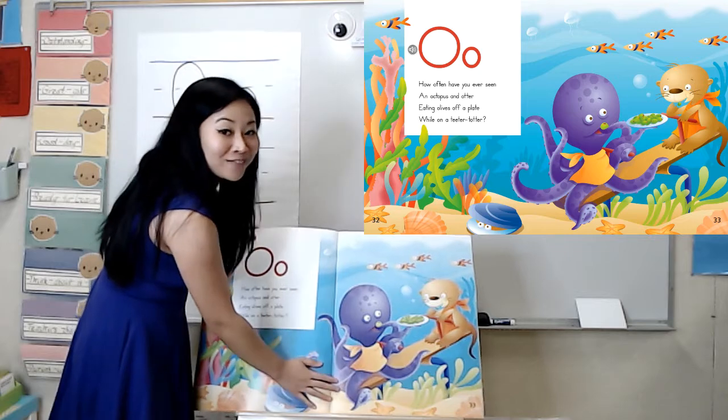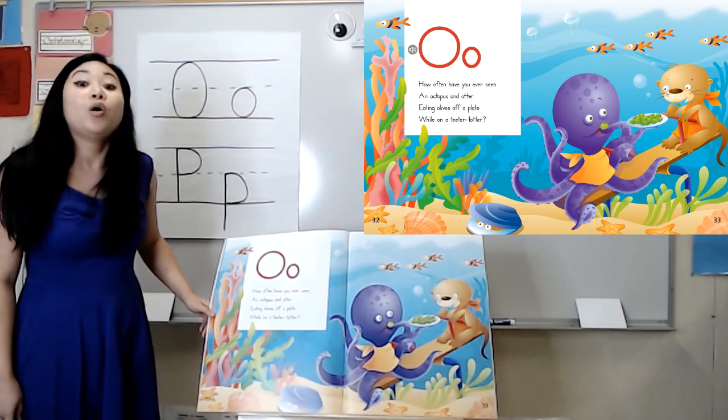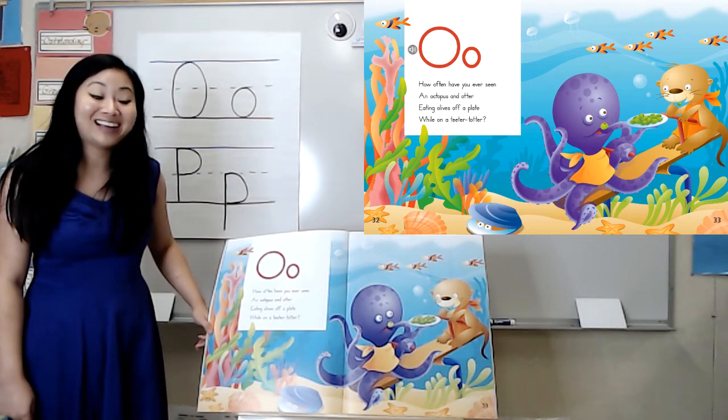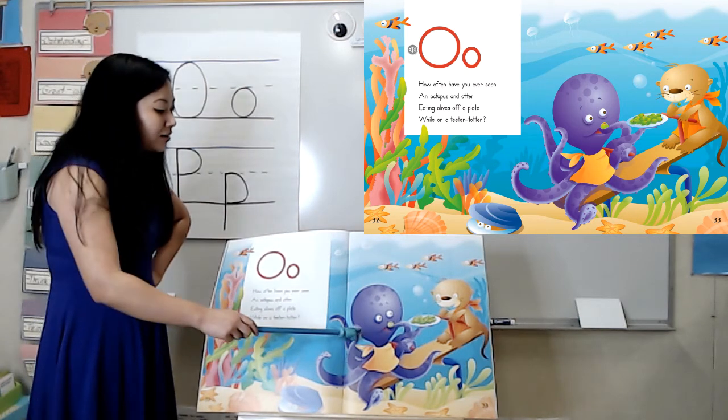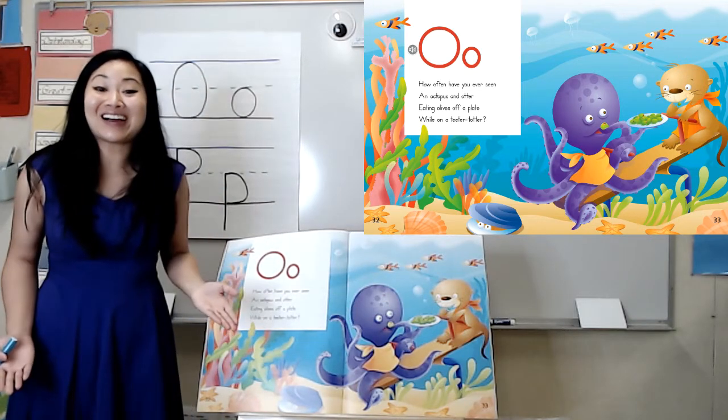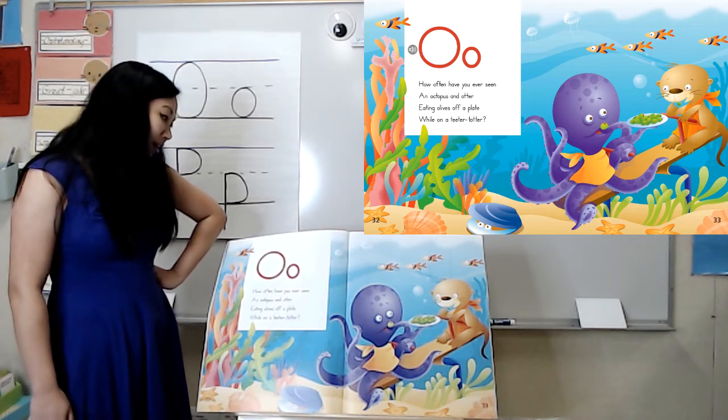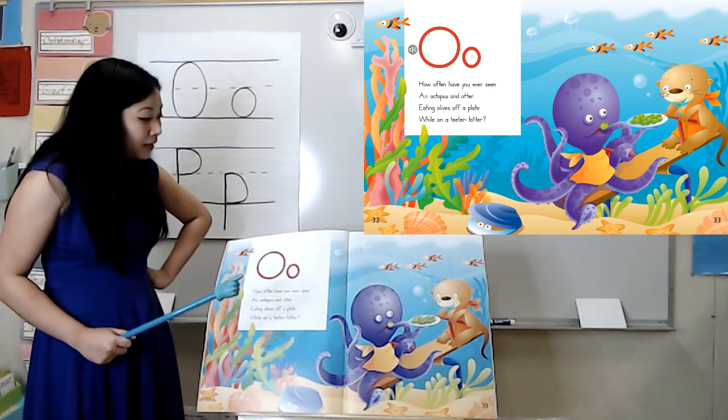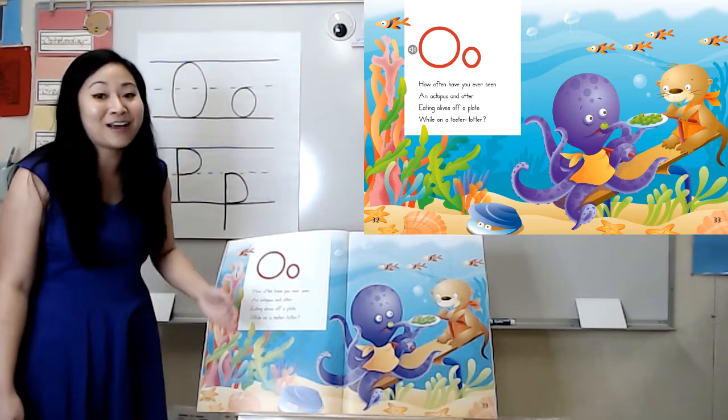And before we start, friends, let's make some observations. What do you notice about the illustrations on this page? What do you see? You might say, I see an octopus and my friends, that's an otter, just like our class. Where are they? Well, they're both sea creatures, so they must be underwater. And also, there's a whole bunch of sea creatures around them. So that tells me this is definitely underwater.